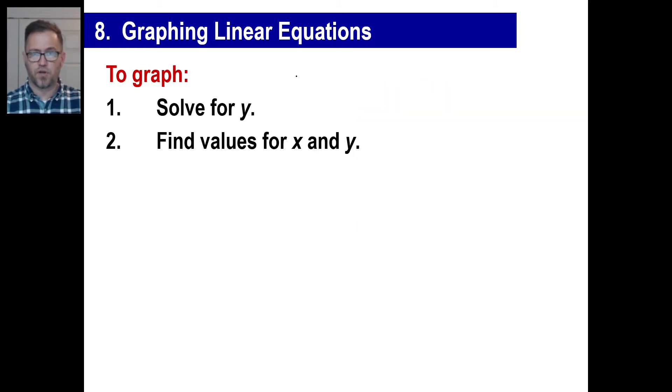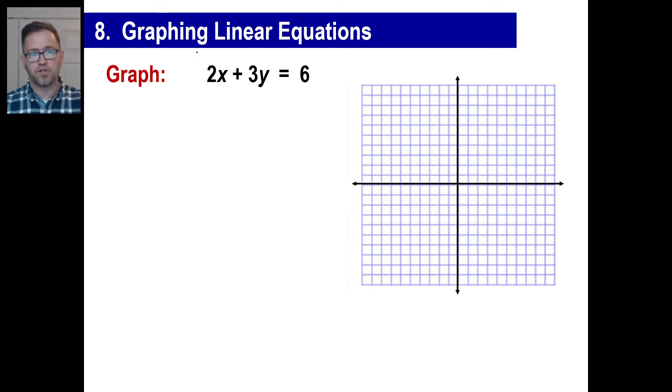Okay, well, let's follow the directions here. We're going to graph this. We're going to go first, solve for y. Second, find values for x and y and we're going to plot them. Let's solve for y. So let's first off, let's get the x out of there. Let's move it over to the right. That gives us negative 2x plus 6. And the last thing we're going to do is we're going to divide by 3. There's my y.